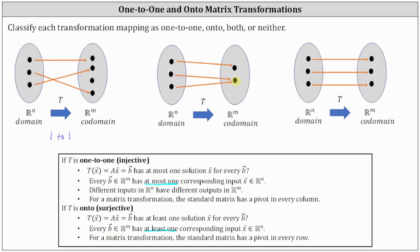Having one or two inputs does meet the requirement of having at least one corresponding input. The mapping of the second transformation is onto, but not one-to-one.